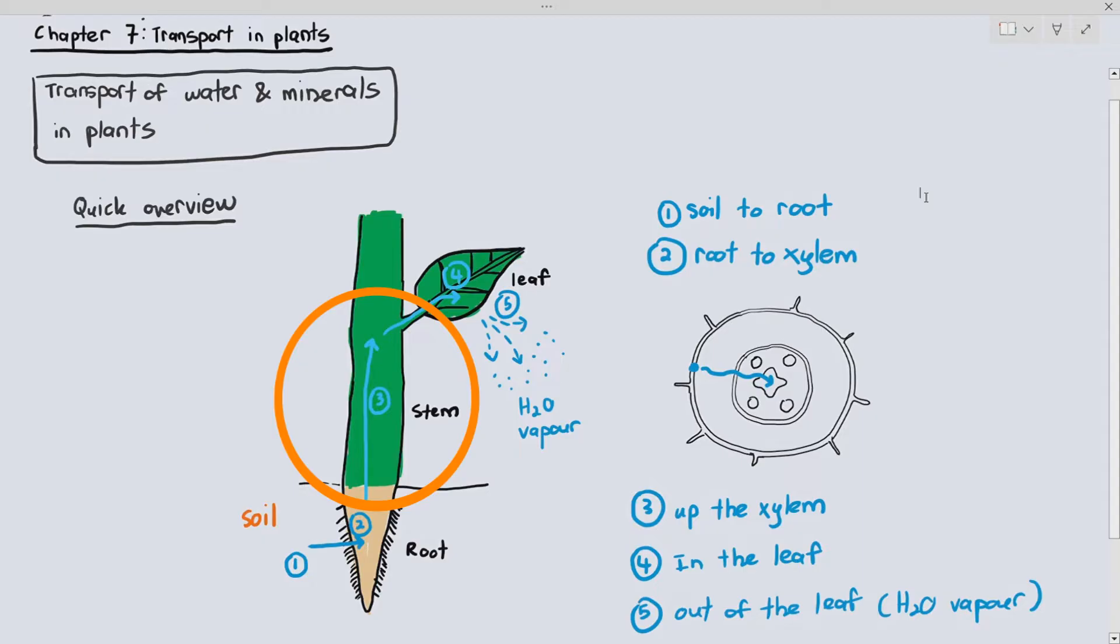The movement of water and minerals up the xylem is going to be a little bit confusing, and I can't talk about how water and minerals move up the xylem before talking about the movement of water in the leaf and out of the leaf. So if we follow the sequence, we are supposed to do number 1, 2, 3, 4, and then number 5.